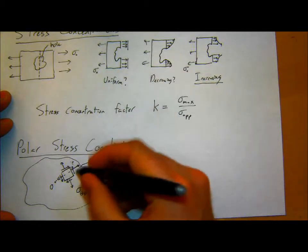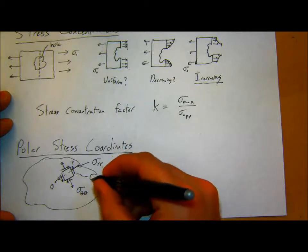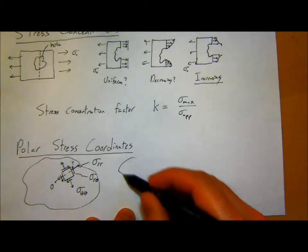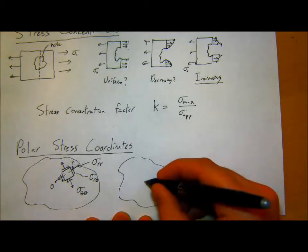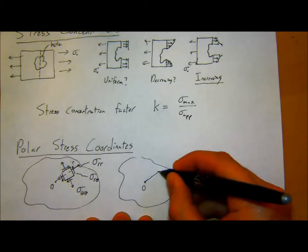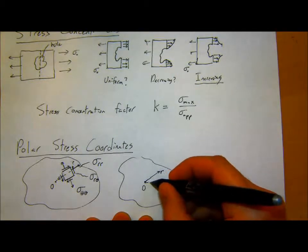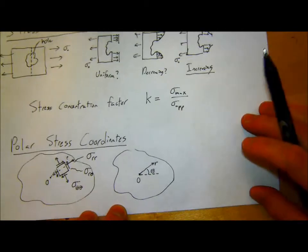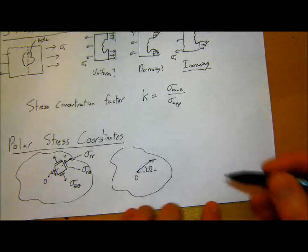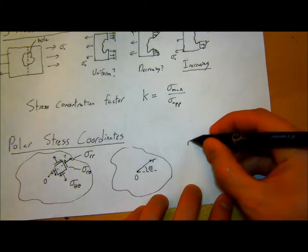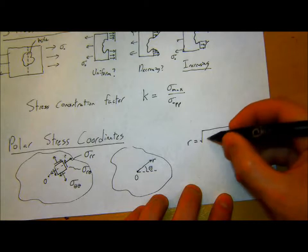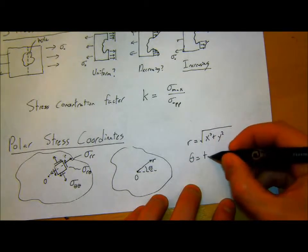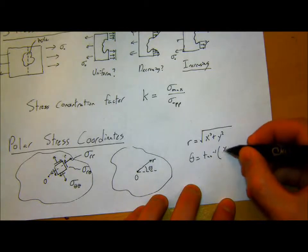For some direction r at some angle theta away from the horizontal — your general stress coordinates, if you remember stress transformations — r is x-squared plus y-squared. Theta is the inverse tangent of y over x, for a general polar-to-Cartesian coordinate transformation. For stress transformation, it's a little bit different and more complicated.